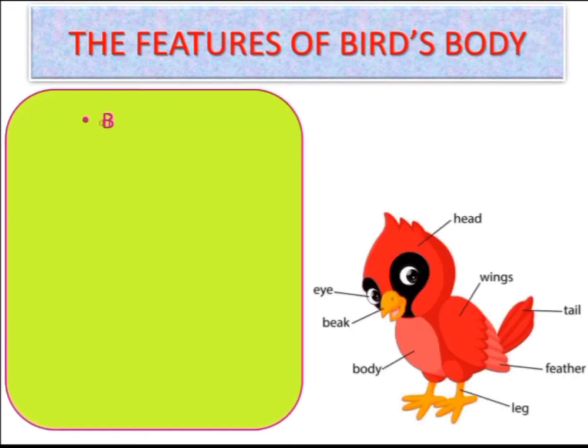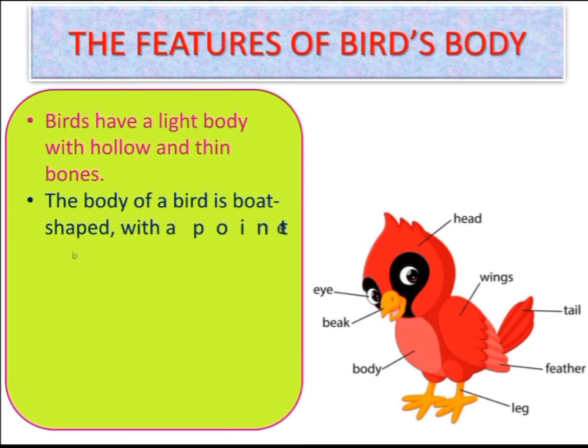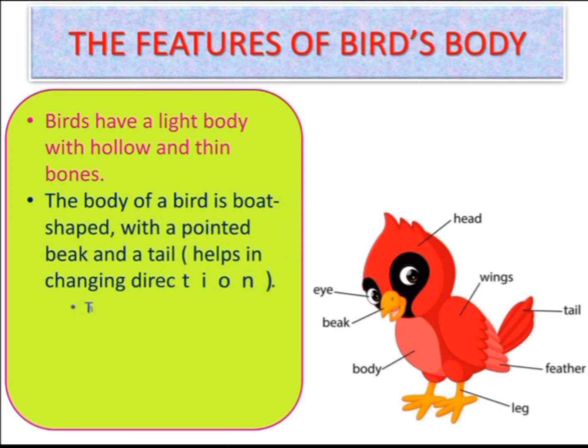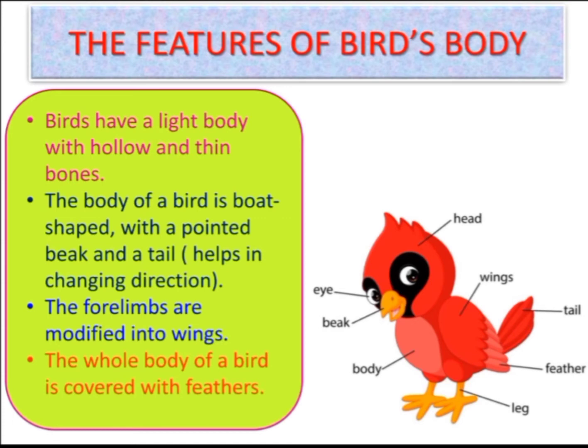Let's see the features of the bird's body. Birds have a light body with hollow and thin bones — that means they are almost weightless. The body of a bird is boat-shaped, with a pointed beak and a tail. The tail helps in changing direction, and with the help of wings and tail, they fly.